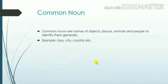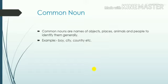Definition of common noun. Common nouns are names of objects, place, animals, and people to identify them generally. Common noun mein ham jo naam kisi jaga ko, kisi cheez ko, kisi animal ko, ya phir kisi insaan ko phehchanne ke liye generally use karte hain. Example: boy, city, country, etc.